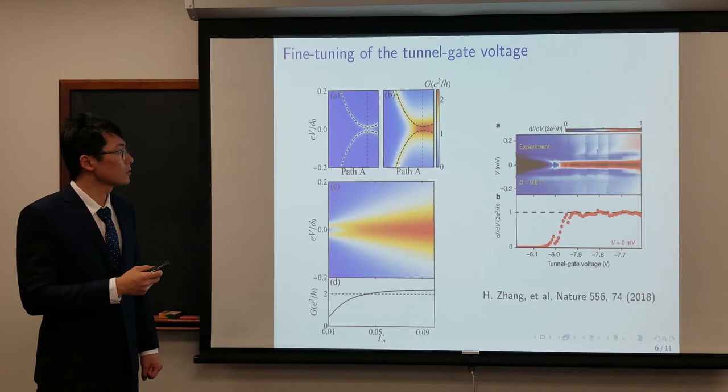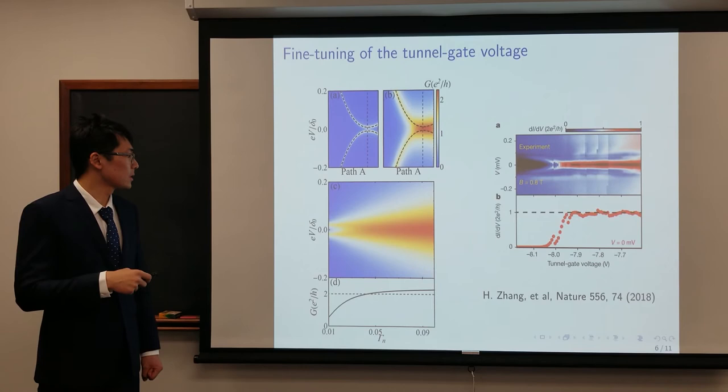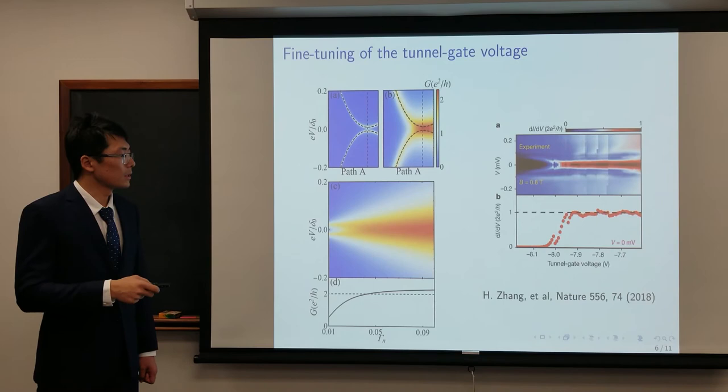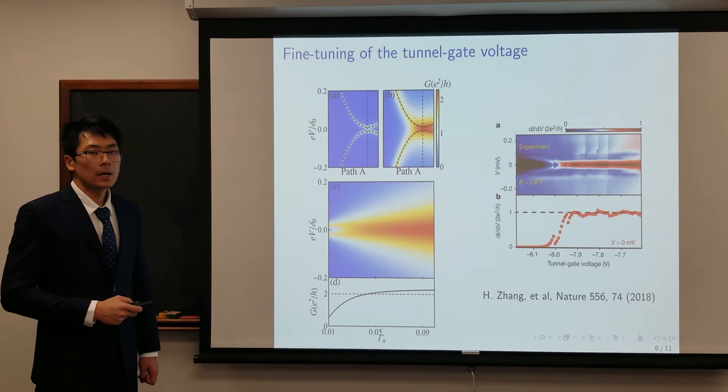We can also try to manipulate the tunnel gate voltage by controlling gamma_n here. In the left figure, we show the change of conductance from a very low transmission probability to a higher one, and the conductance will grow from way below 2e²/h to almost 2e²/h, which is exactly the same scenario in the experiment shown in the right figure here. They also start from a very low transmission probability to a higher one and find that conductance, which is not quantized initially, now becomes quantized.